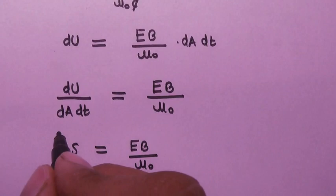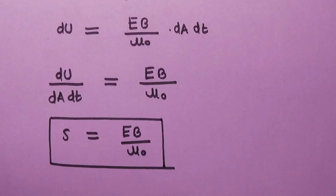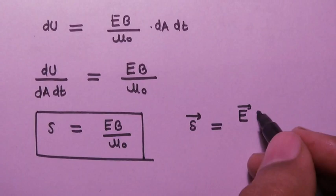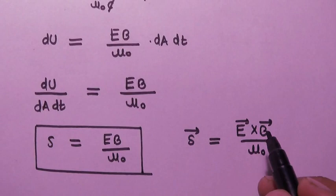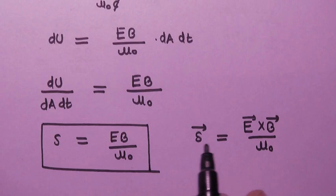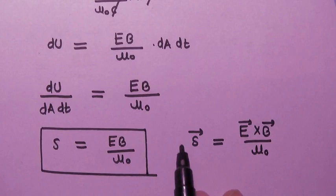Since the electric field and magnetic field are perpendicular to each other in an electromagnetic wave, we can write the Poynting vector as S vector equals E vector cross B vector upon μ₀. This equals EB·sin90°, and since sin90° equals 1, EB equals |E vector cross B vector|. Therefore the Poynting vector has the same direction as electromagnetic wave propagation and is given as EB/μ₀.